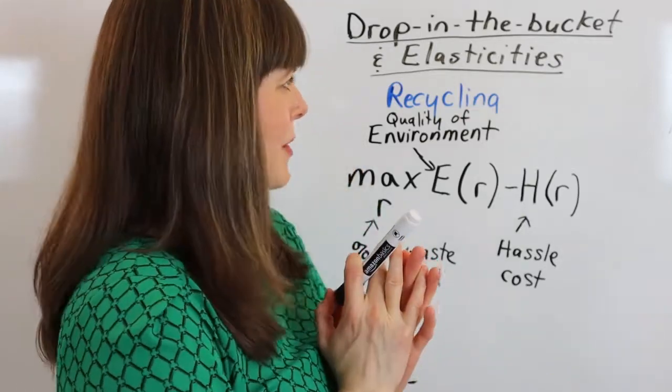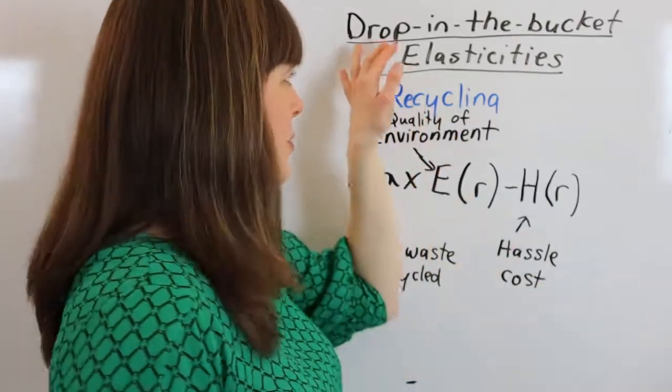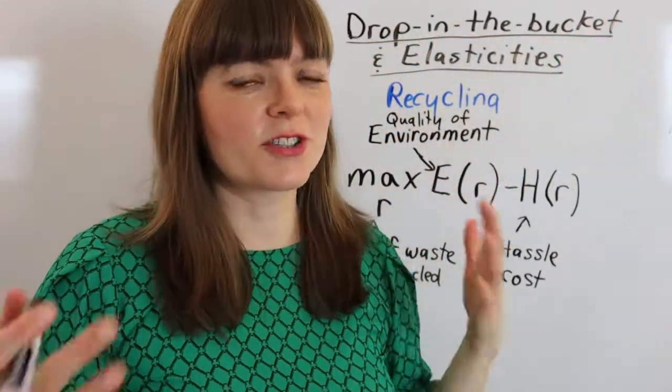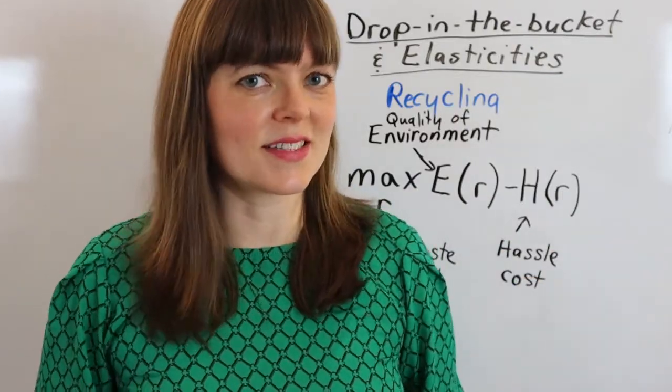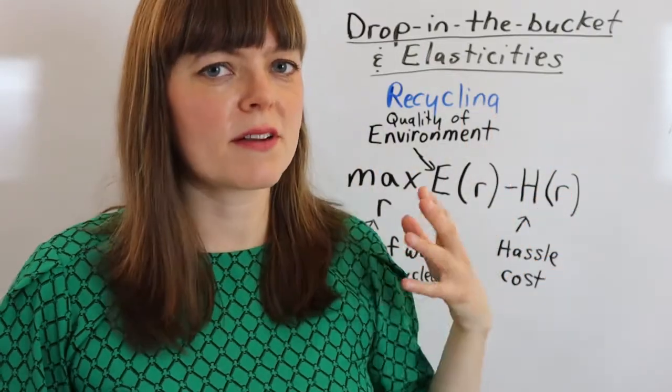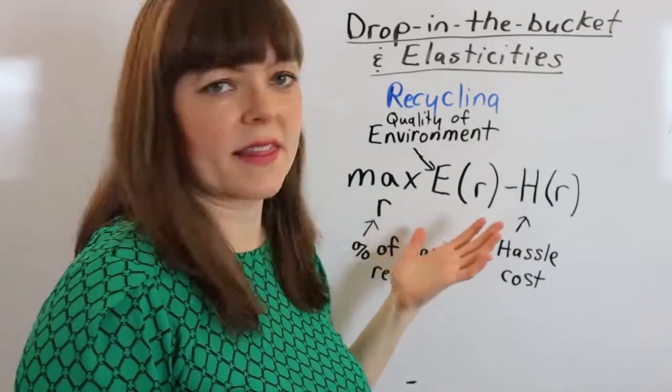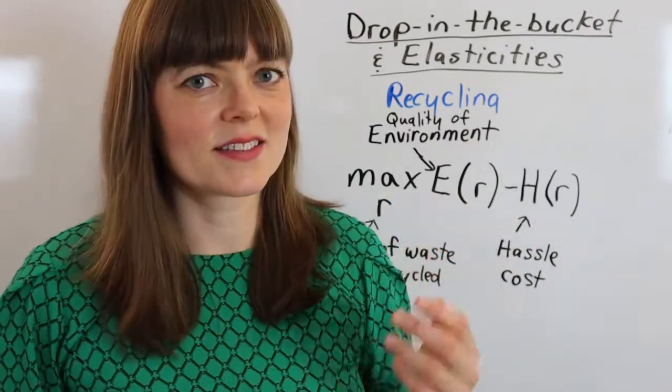In this video I'm going over a microeconomic model of recycling, and this is actually a public goods problem, so we're going to have a drop in the bucket problem as part of this, and I'm going to show you how that looks in a microeconomic model. It has to do with elasticity, and along the way we're going to think about some of the features of this model that are interesting, and how the government can think about changing things when we have a problem that looks like this.